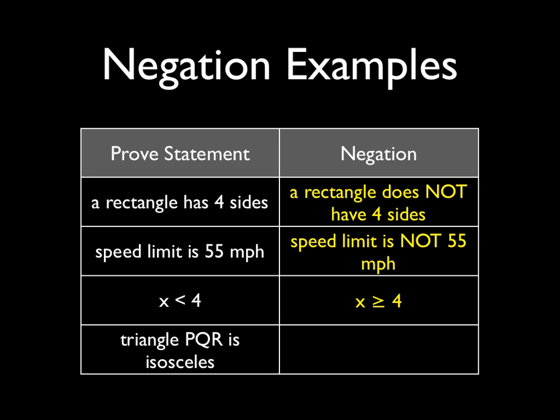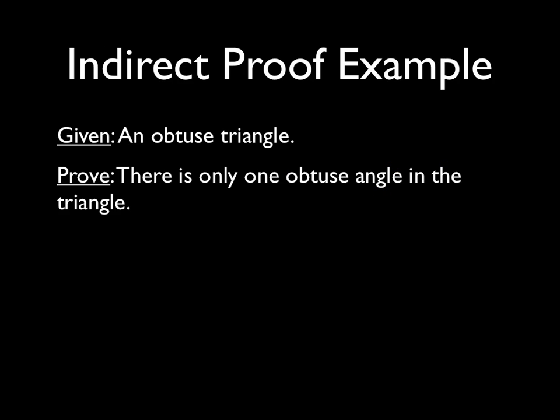And lastly, if we want to prove that triangle PQR is isosceles, we assume that it would not be isosceles, and then somehow we would prove that would be the case. So here's an example: given that you have an obtuse triangle, we want to prove that there is only one obtuse angle in that triangle.